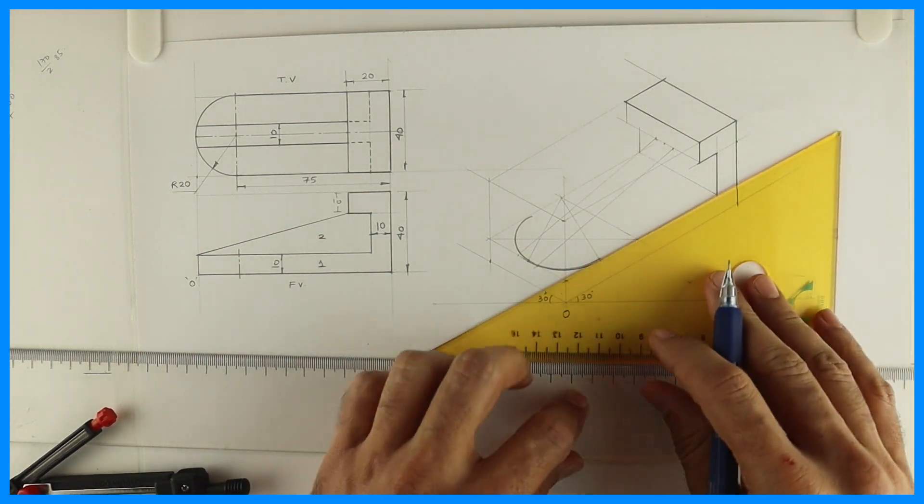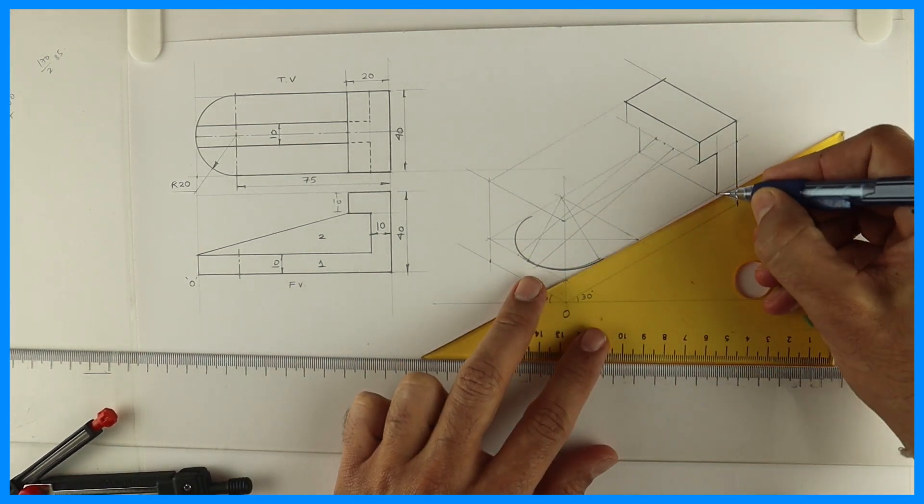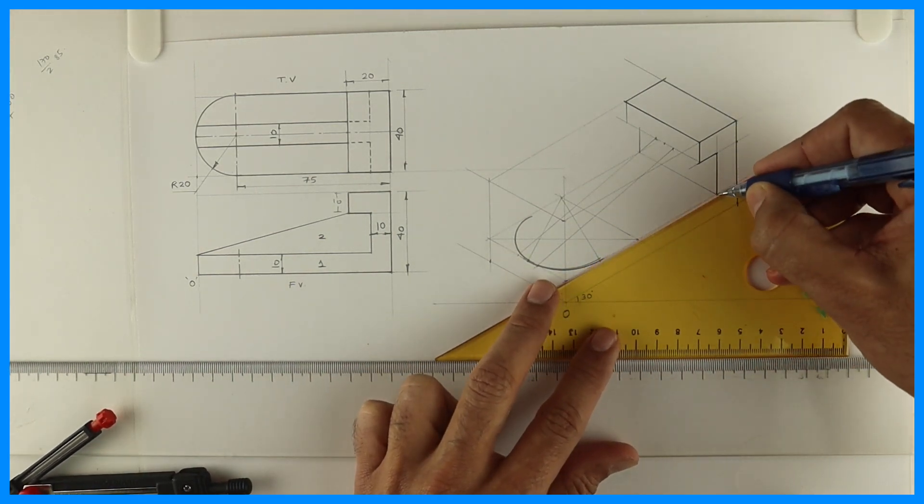After that we'll darken this remaining line. See, this will be dark.